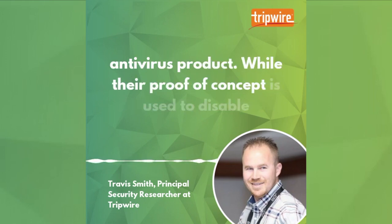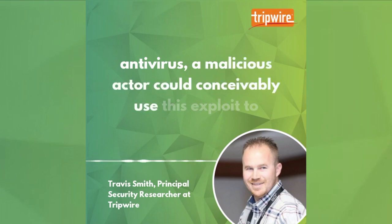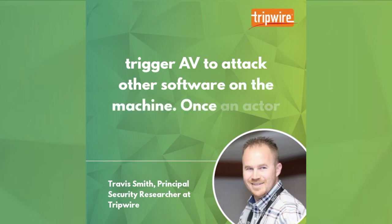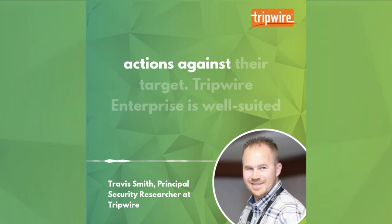While their proof of concept is used to disable antivirus, a malicious actor could conceivably use this exploit to trigger AV to attack other software on the machine. Once an actor has disabled security tools, they're able to perform secondary actions against their target.